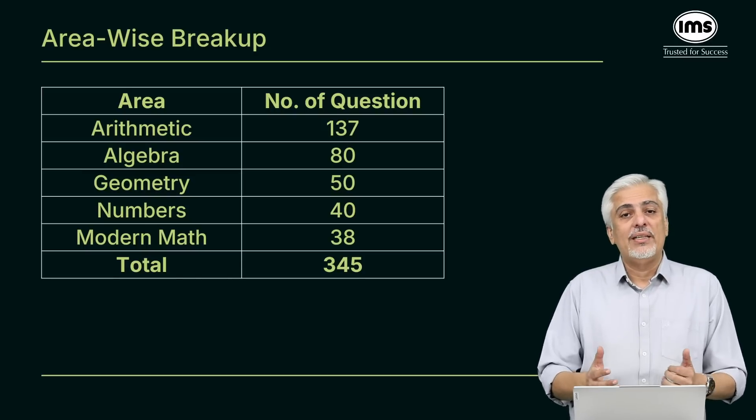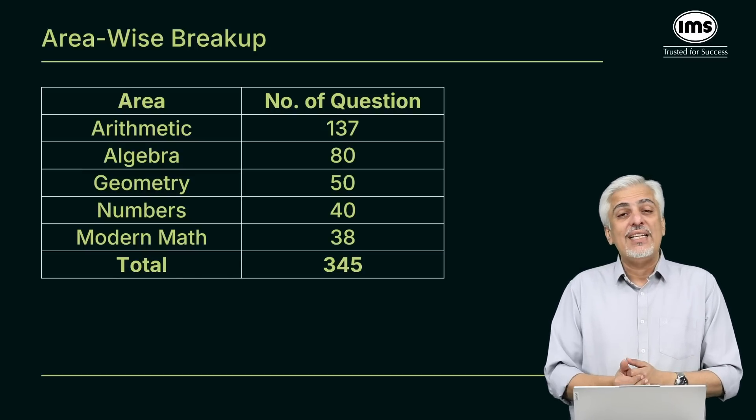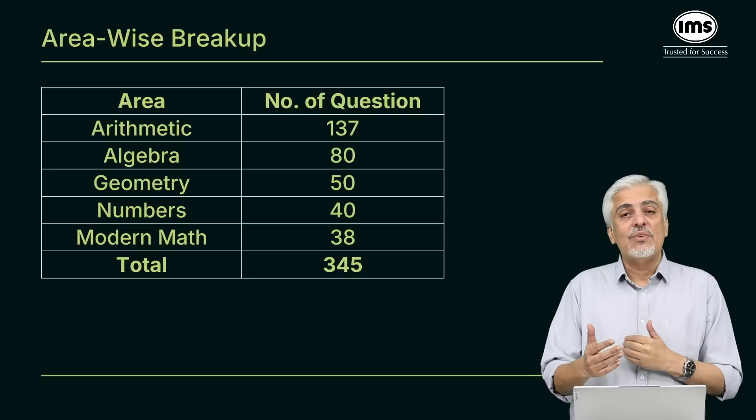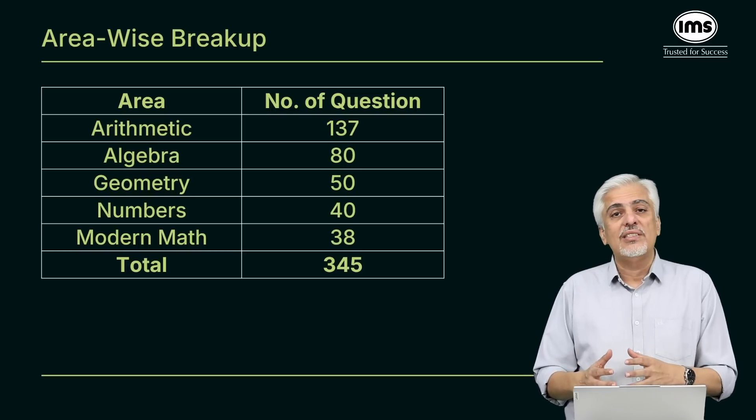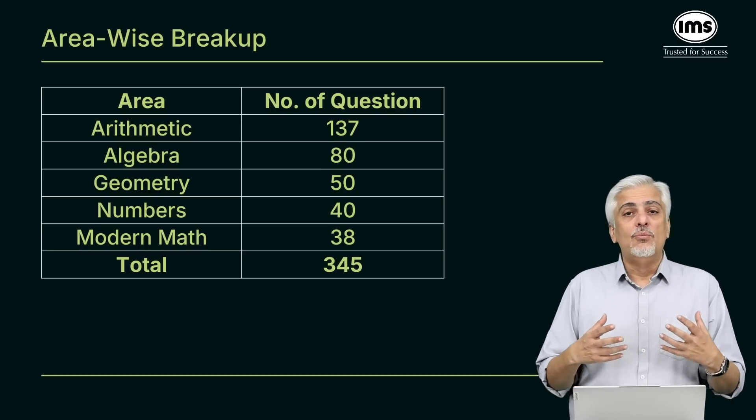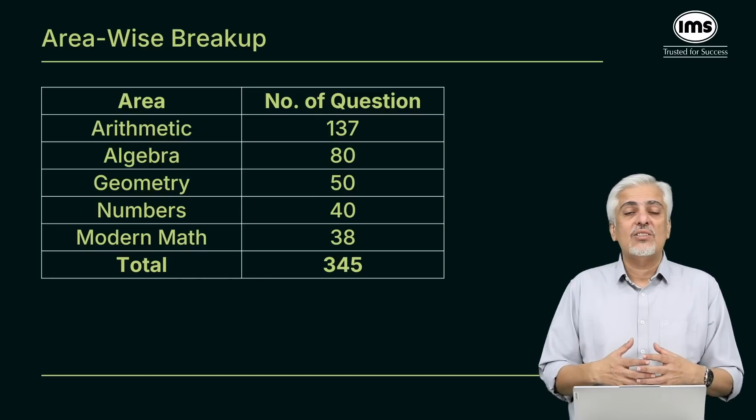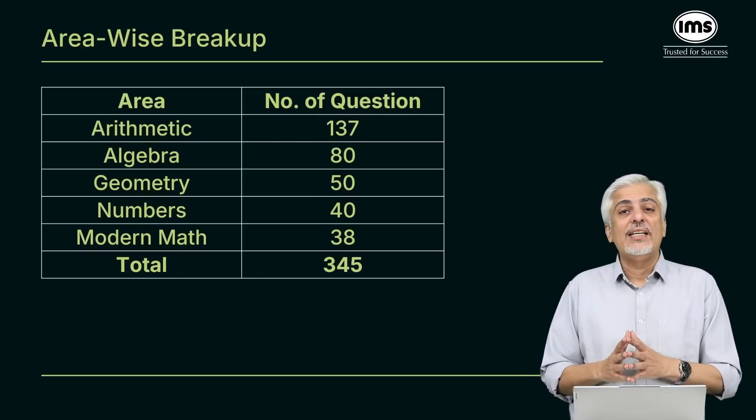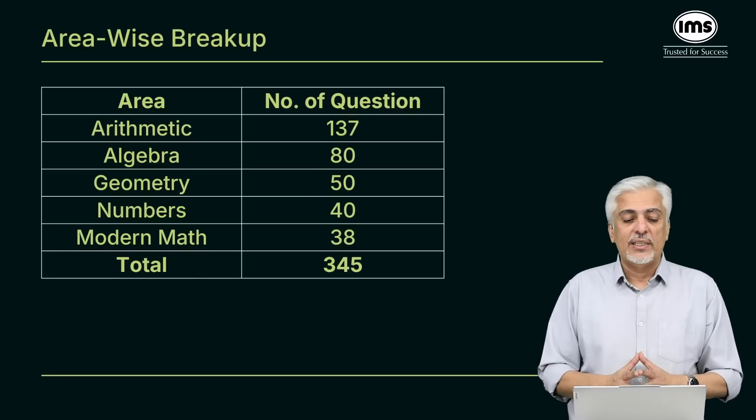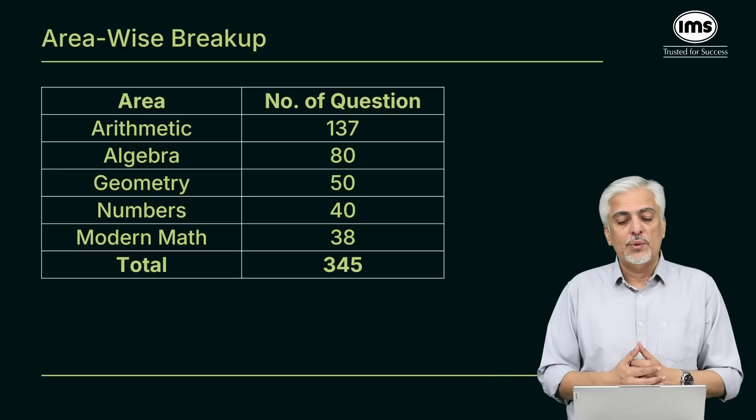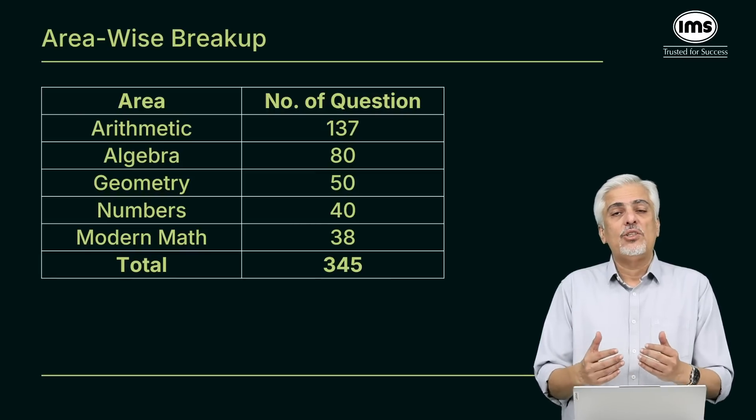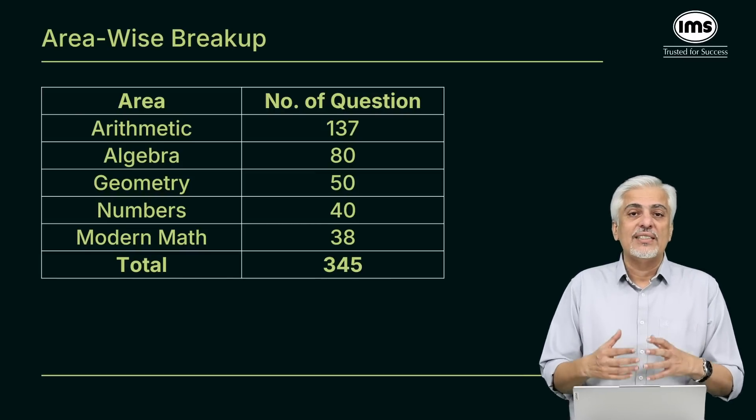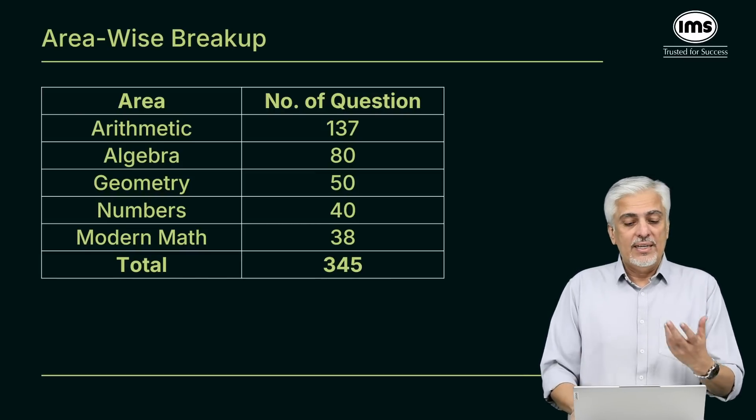Next important topic is algebra which is approximately 80 questions, exactly somewhere between geometry and arithmetic. Algebra over the last couple of years has started becoming very popular, more and more algebra is asked. If you look at last three years or something, the number of algebra questions are kind of equivalent to the number of arithmetic questions. Geometry is approximately 50 questions, numbers is approximately 40 questions and modern maths 38.